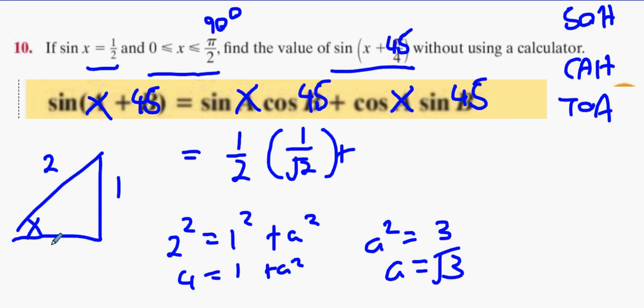What's cos then? What's cos x? Adjacent over hypotenuse, exactly. Root 3 over 2. And sin 45? 1 over root 2.